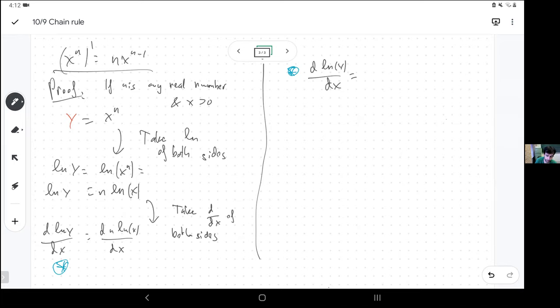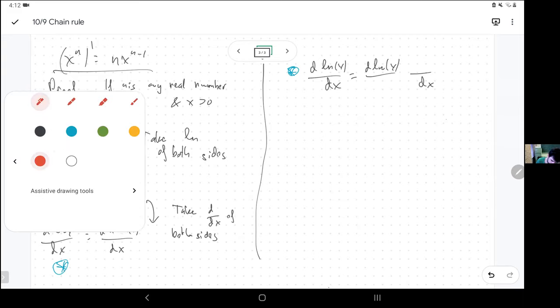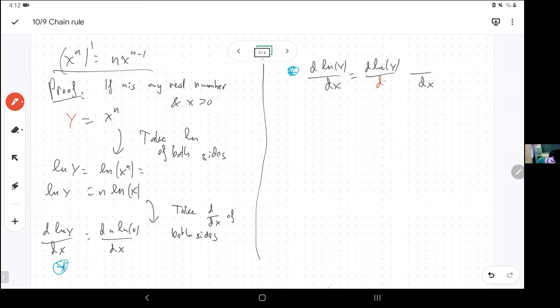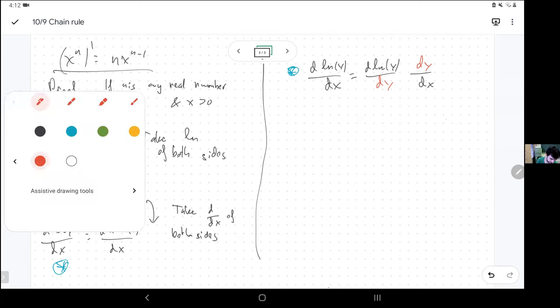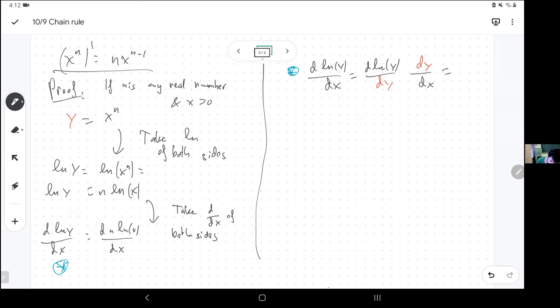The chain rule says you're going to stick in the middle that letter that is not x. And now I'm taking the derivative of the logarithm of y with respect to y. That's just the derivative of a logarithm, which I know by heart. It's one over y. And then the derivative of y with respect to x is the thing I don't know.